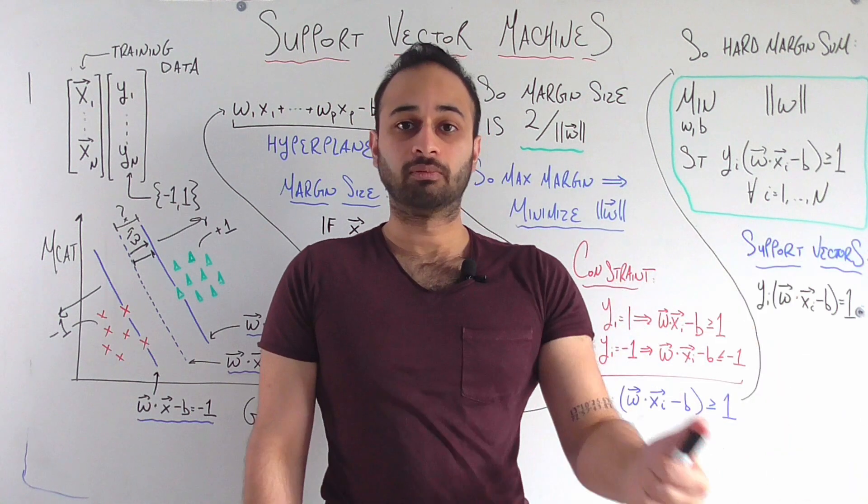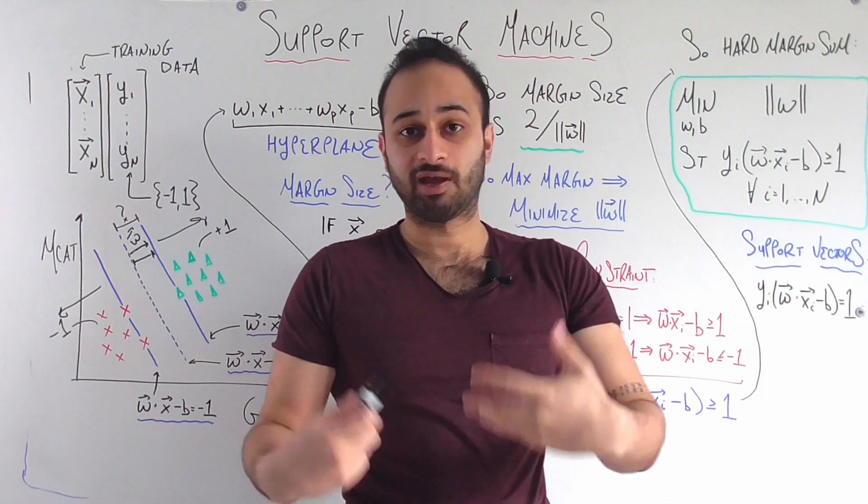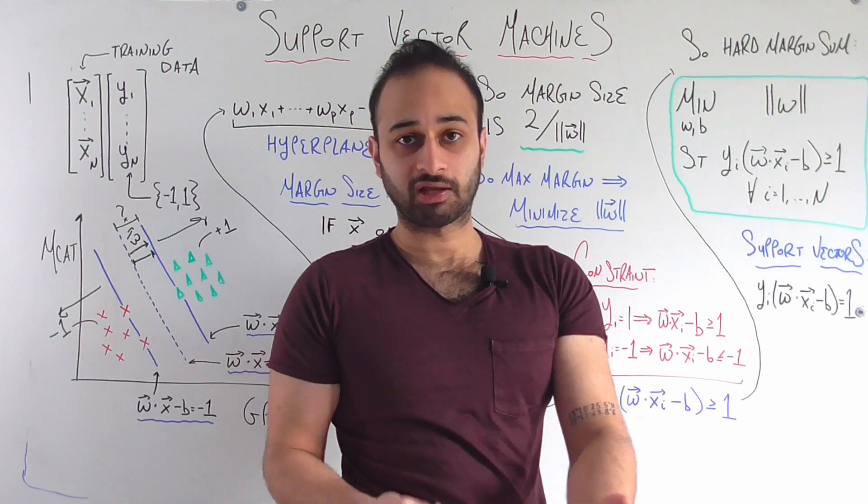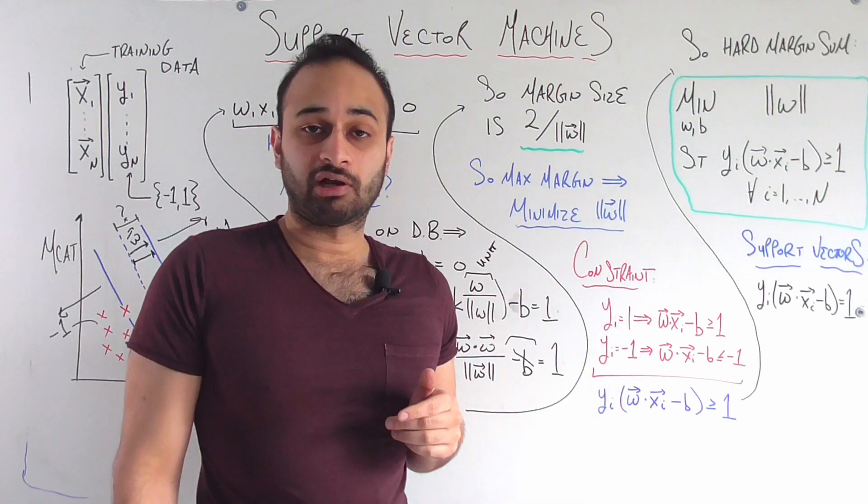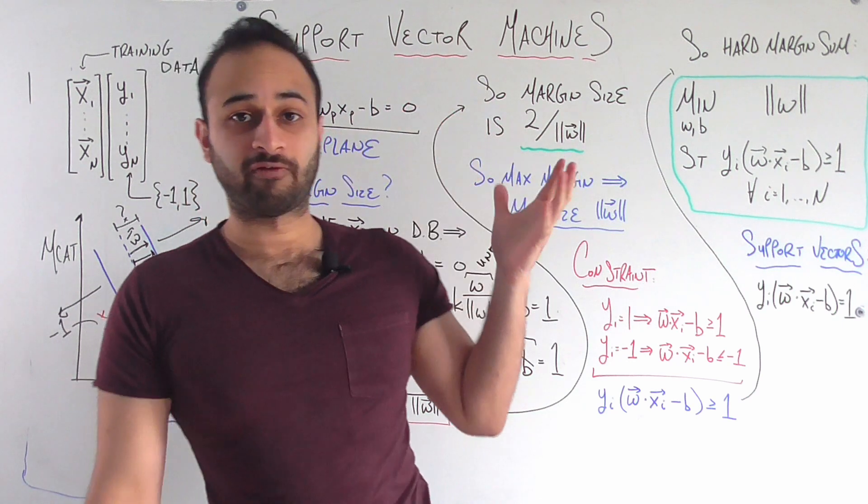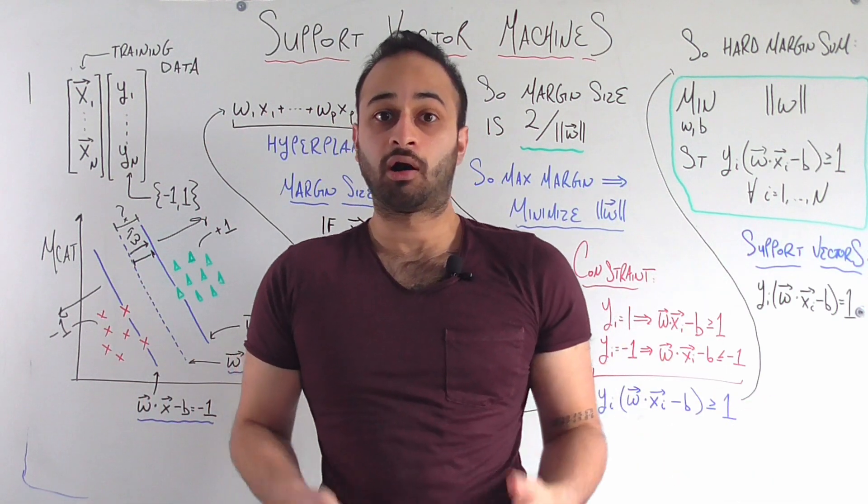If we can find a w and b that satisfies this, then we have solved the SVM problem. So that's mathematically a hard margin SVM. And the last thing I'll note here is that, of course, this is called a support vector machine. So where are our support vectors?